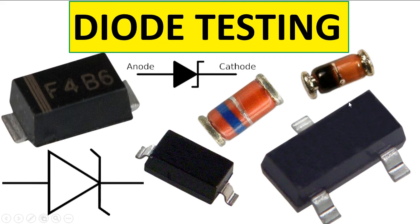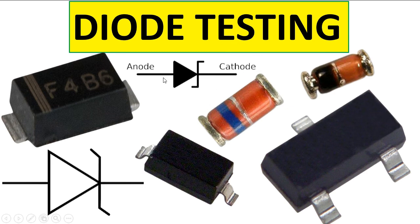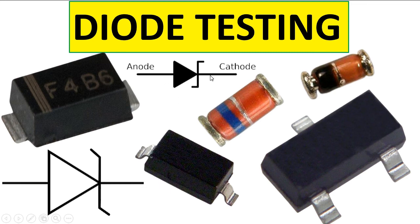The diode has many types. Its symbol shows an anode and a cathode, or plus and minus. The line on the physical component indicates the cathode. There are also Zener diodes — identified by a blue line — and double diodes which look like a transistor but contain two diodes. To test a diode, place the black probe on the cathode and the red probe on the anode; you should get a reading. If you swap the probes, you should get no reading.